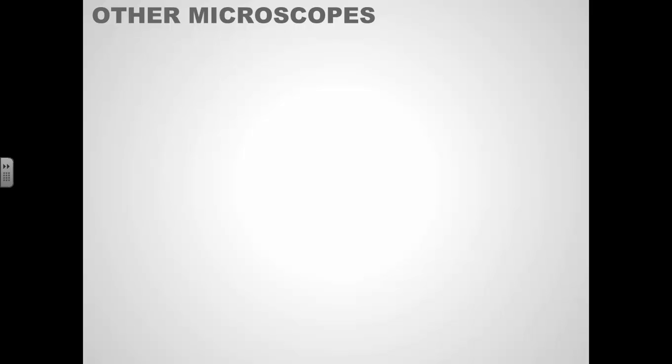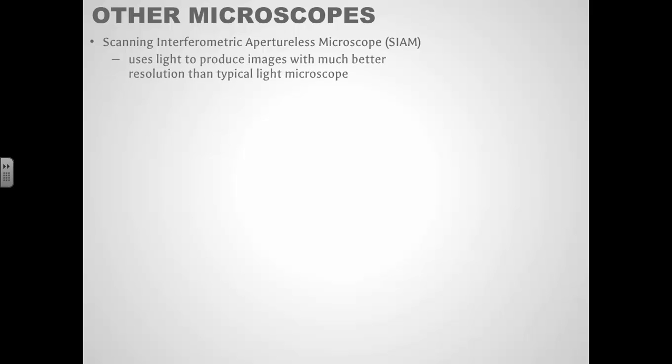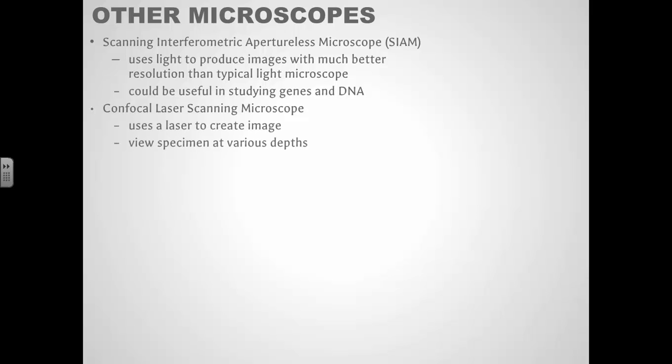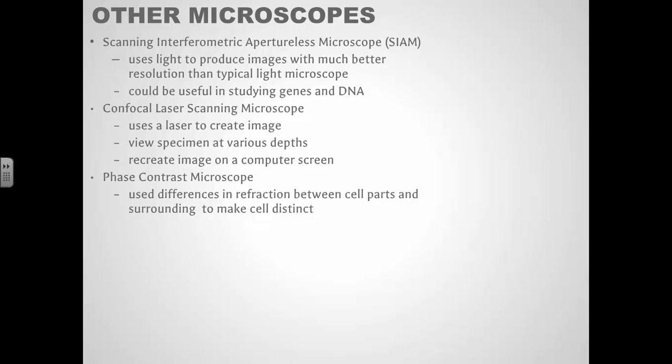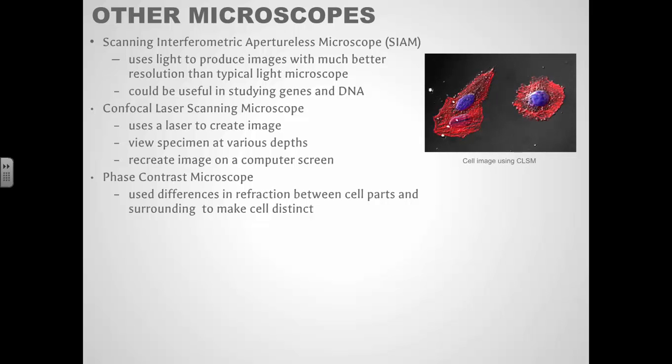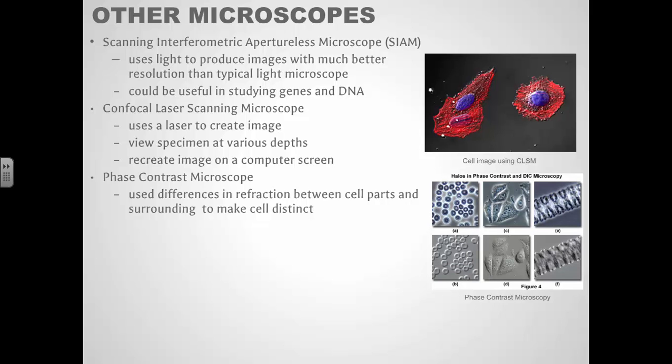There's lots of other types of microscopes. You don't really need to remember too much about these. But just to show you some of them because they're interesting. Scanning interferometric microscope is interesting. It uses light to produce images at a much better resolution than a usual light microscope. There's laser scanning microscopes which use a laser to make the image. And you can view the specimen at a variety of depths and then recreate it on a computer screen. There's another type of light microscopy that uses differences between parts of your sample to make different parts of your specimen stand out. This is using the laser microscope. That's an image of a cell. This is using phase contrast microscopy to look at different parts of the cell.